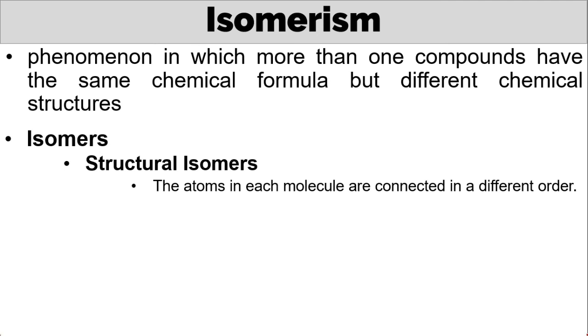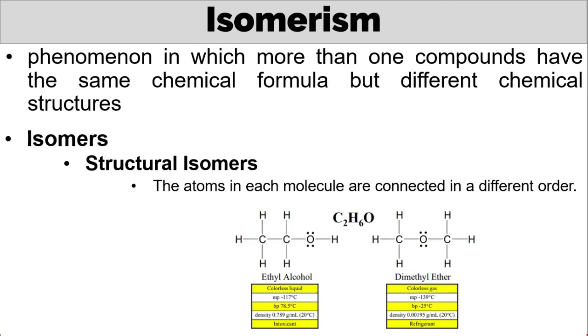So let's take for example, ethyl alcohol and dimethyl ether. They are both C2H6O, but the arrangement is different. In ethyl alcohol, it's C-C-O-H. In dimethyl ether, it's C-O-C. Alcohol and ether are two of the functional groups that we are going to study in the next videos.